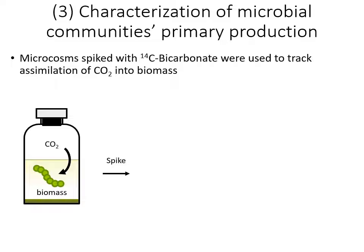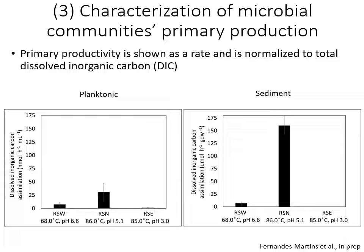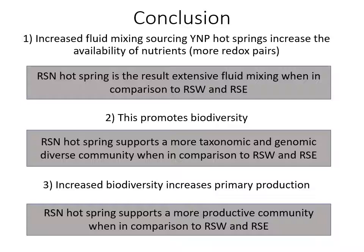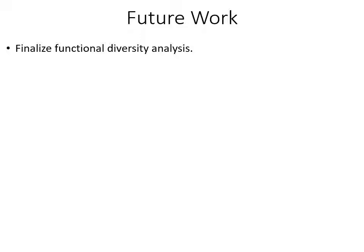When we look at primary productivity using 14C bicarbonate label assays, we see the same pattern: primary productivity is higher in Roadside North than in Roadside West and East for both planktonic and sediment communities. In conclusion, Roadside North has more fluid mixing, is more taxonomically and genomically diverse, and has higher primary productivity than the other two hot springs. Future work includes finalizing functional diversity analysis and testing the hypothesis with a larger sample size while holding temperature constant, since that could have some influence.